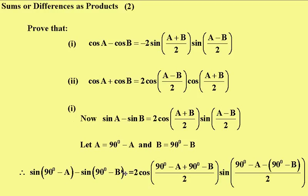Okay, in this one we have to prove that cos A minus cos B equals minus 2 sin of (A+B)/2 times sin of (A-B)/2. And part two: cos A plus cos B equals 2 cos of (A-B)/2 times cos of (A+B)/2.